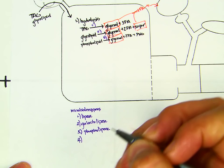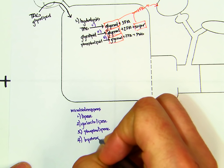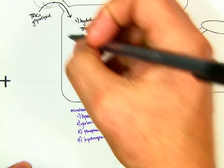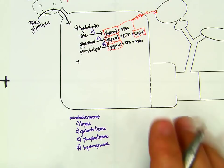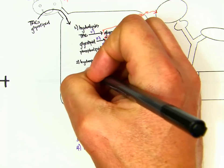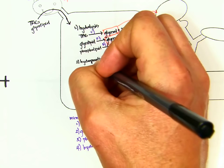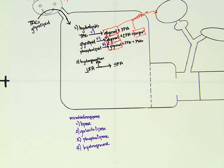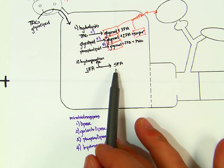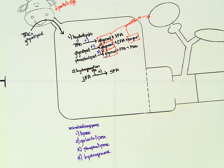The last thing that's going to happen to fat fed in the rumen is hydrogenation, which happens via the activity of hydrogenase. We're going to take unsaturated fatty acids and produce saturated fatty acids by adding hydrogen, decreasing the number of double bonds in the fatty acid. We're increasing the amount of energy in the fatty acid, so this unsaturated fatty acid has less energy than the saturated fatty acid.